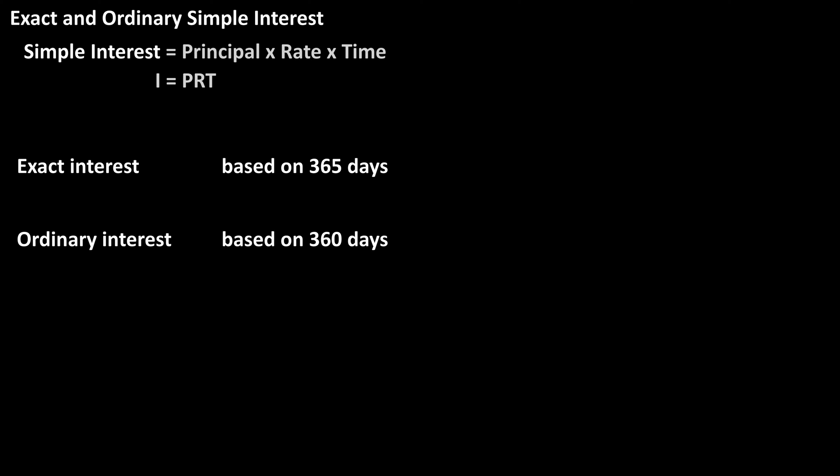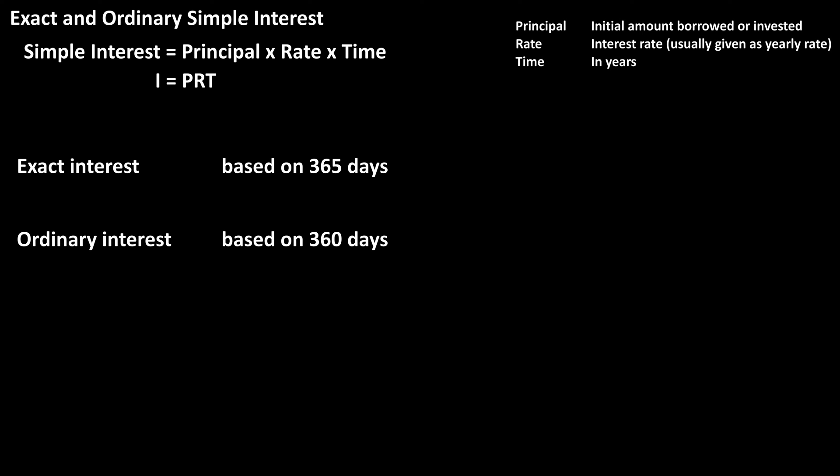Exact and ordinary interest are used with simple interest, where interest is only calculated on the original principal amount, not the sum of the principal and accumulated interest. The formula for simple interest is I equals P times R times T, where I is interest, P is principal, R is rate, and T is time.